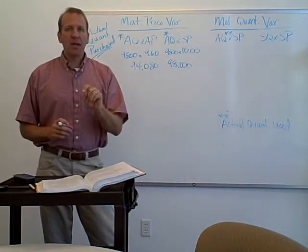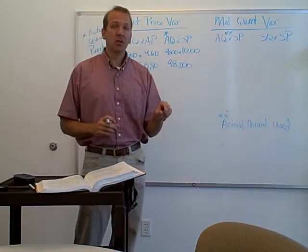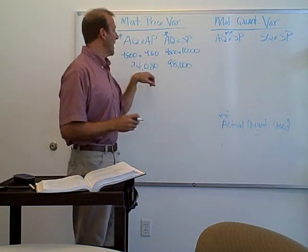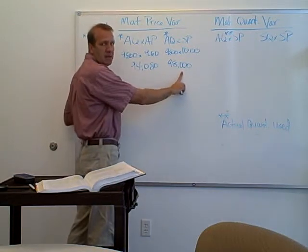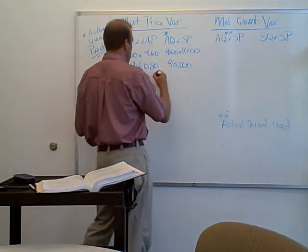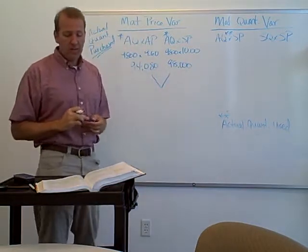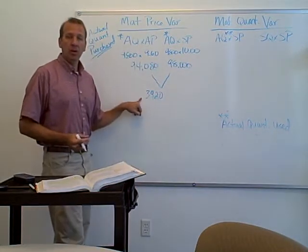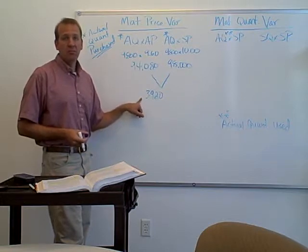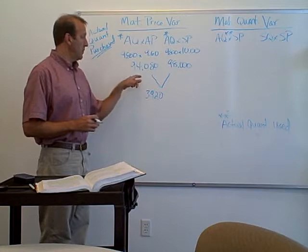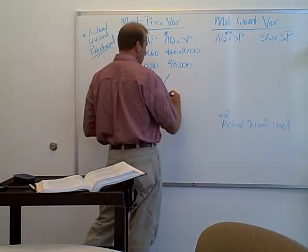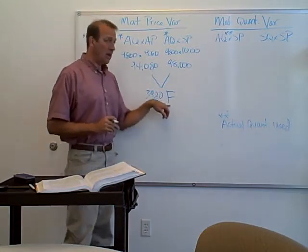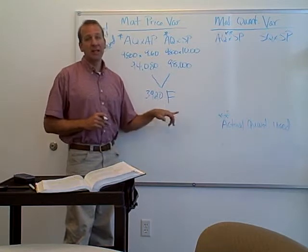Obviously we're doing lumber here, but they also put fiberglass into the boat — you'd have to do the same thing for the fiberglass as well, but we're just looking at lumber right now. Our standard said we should have spent $98,000, but we only spent $94,080. The difference is $3,920. Is that favorable or unfavorable? That's a favorable variance because we spent less. You always have to write F for favorable or U for unfavorable. If you do not include this on your homework or on a test, you would get that wrong.